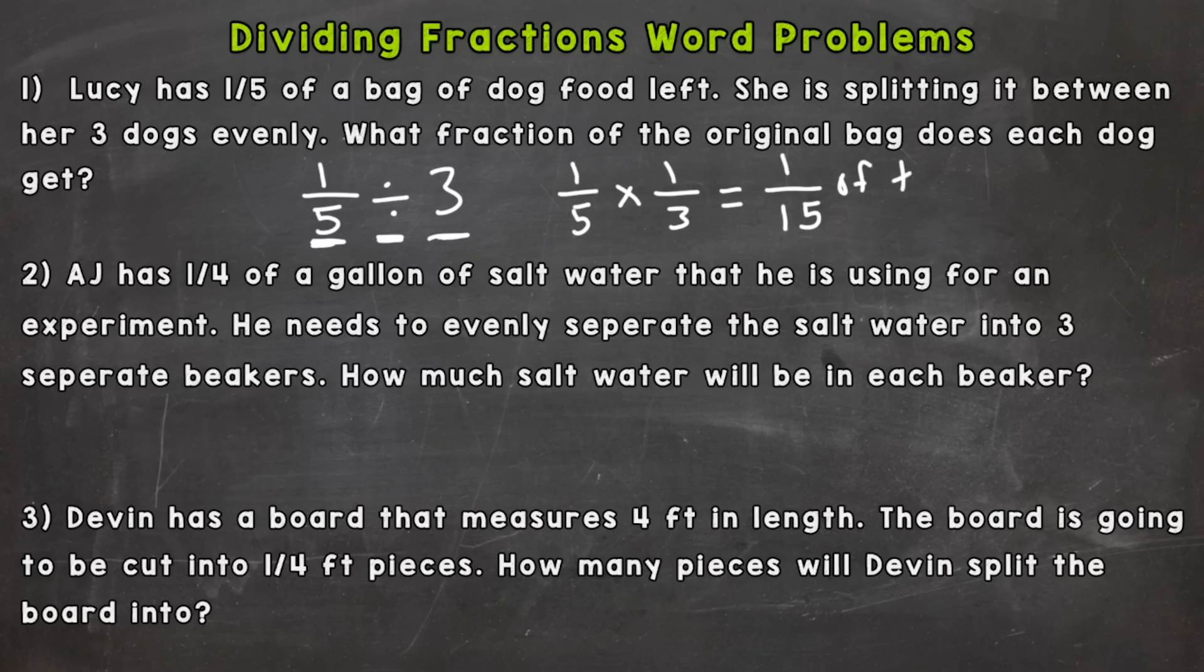All right, number 2. AJ has 1/4 of a gallon of salt water that he is using for an experiment. He needs to evenly separate the salt water into three separate beakers. How much salt water will be in each beaker?